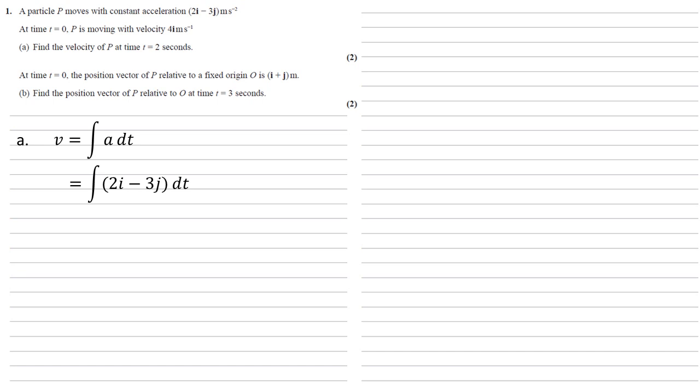And to do this, we just treat the 2 and the 3, those multiples of our i and j, as normal numbers and integrate from there. So the integral of the 2 before the i becomes 2t. The integral of the minus 3 becomes minus 3t. And then we've got our C, our constant of integration at the end.